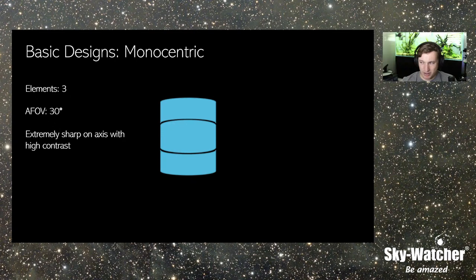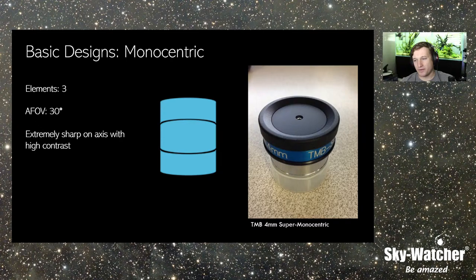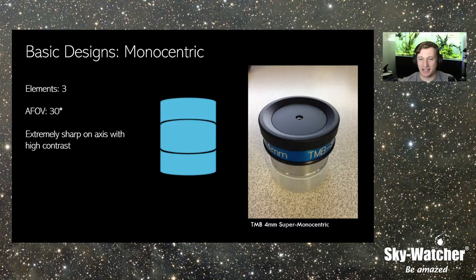Monocentrics — you don't find them too often. They've been a staple for extremely sharp on-axis images and very high contrast, with a simplistic three-element cemented design with no air gap. I had one of the better-known ones, the TMB Super Monocentrics, which are very similar to high-end Zeiss eyepieces. This thing is crazy sharp, but you can see just how tiny the eye lens is — the eye relief is practically non-existent. It was exceptionally sharp on planets because of that simplistic design.